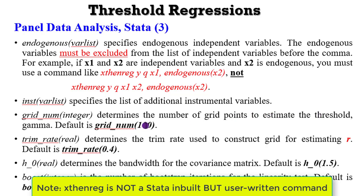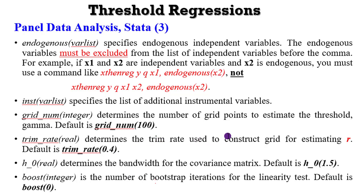By default, the grid is 100, but you can specify an integer. You can also use the trim rate. By default, the trim rate in STATA is 0.4. The trim rate is used to construct the grid in estimating the threshold.